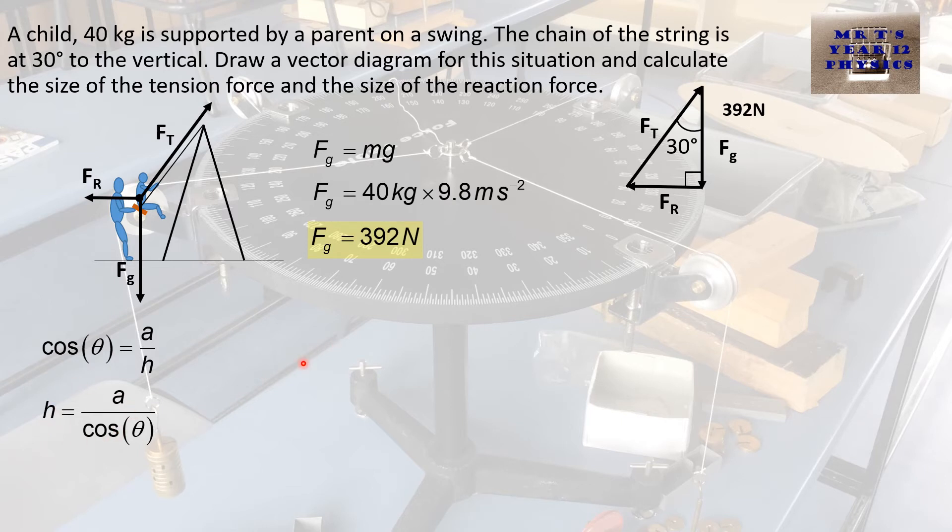Now I substitute in the values. So the tension force equals 392 newtons divided by the cosine of the angle. And I do my calculation. My tension force is 453. But because my two values were only given to two significant figures, I'm going to round this answer to two significant figures and get 450.